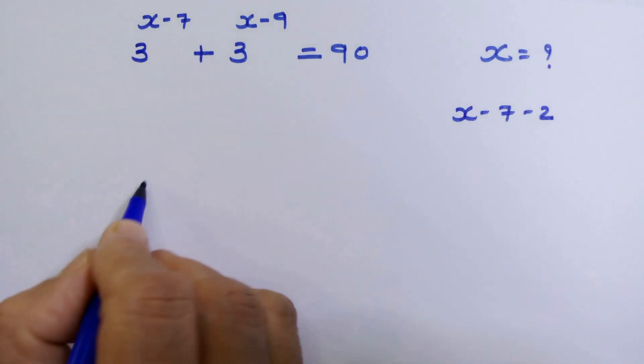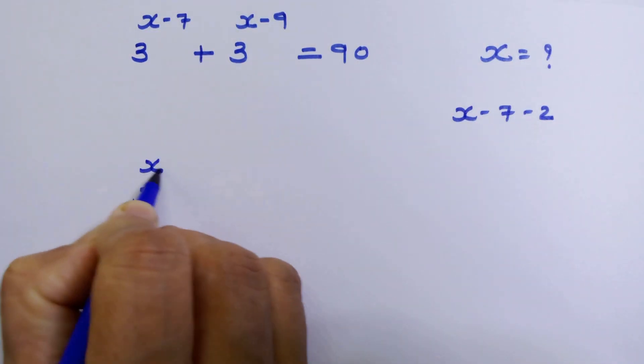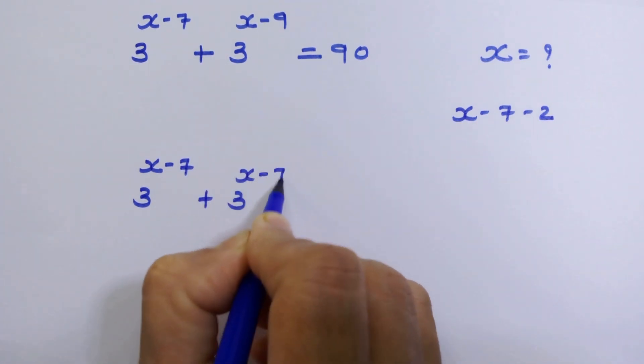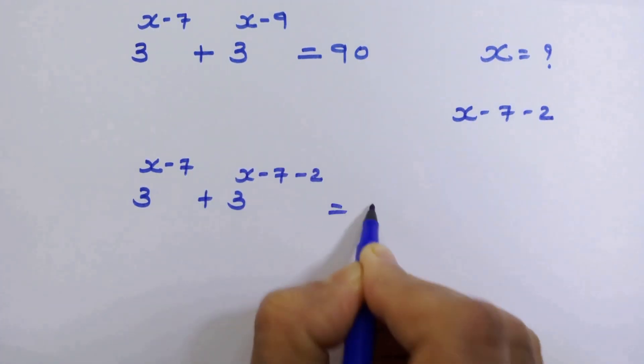So our equation will be 3 raised to x minus 7 plus 3 raised to x minus 7 minus 2 is equal to 90.